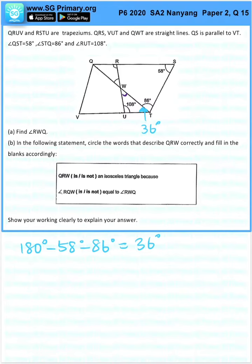This portion here, now we can find 180 minus 108 minus 36 is 36 degrees. This is also 36 degrees.